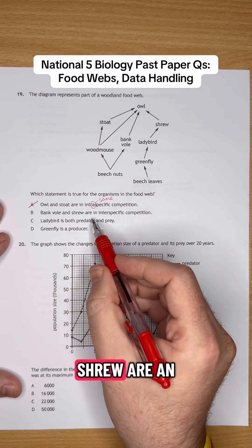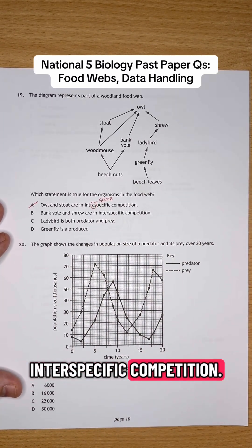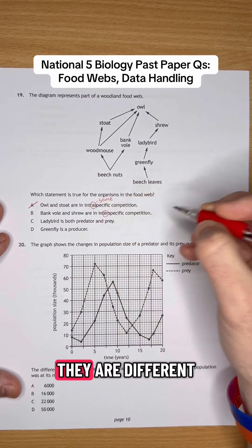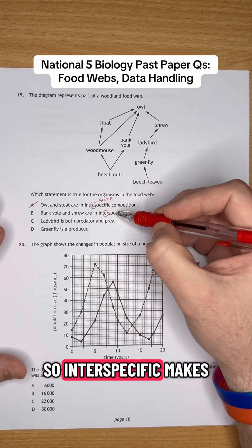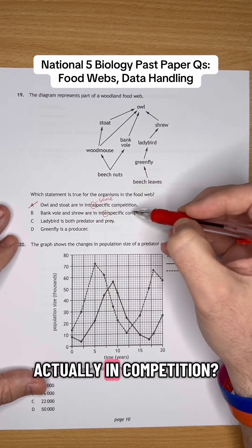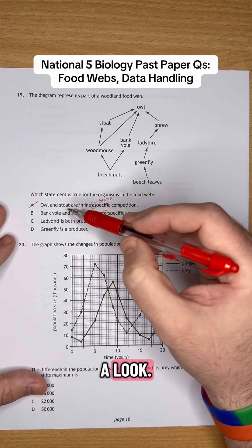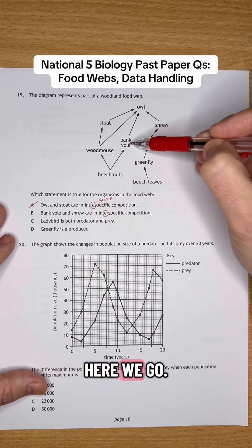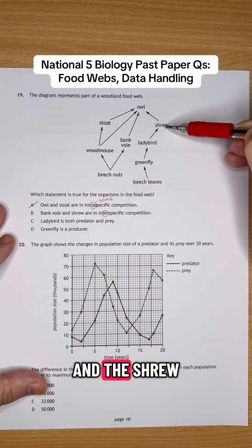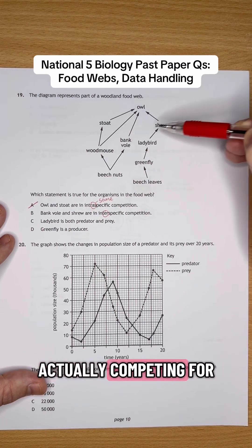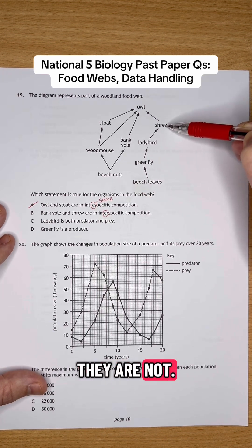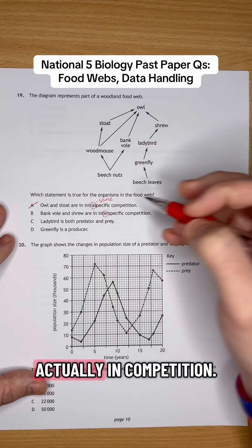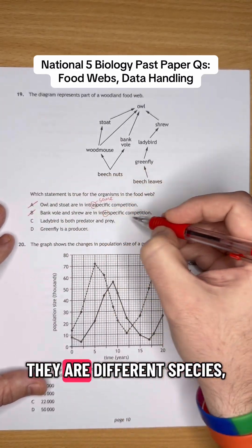The bank vole and the shrew are in intraspecific competition. So they are different species, so intraspecific makes sense. But are they actually in competition? Well, let's have a look. The bank vole is here and the shrew is over here. Now, are they actually competing for a food source? They are not. The shrew eats ladybirds and the bank vole eats beech nuts. So they're not actually in competition, even though they are different species.